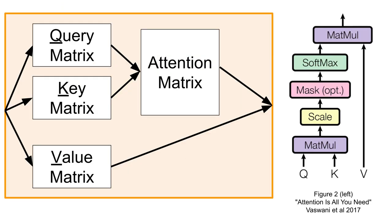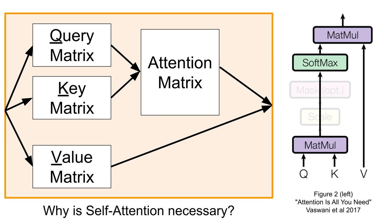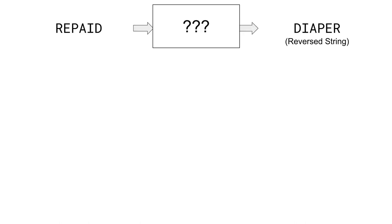We have successfully implemented figure 2 from the original transformers paper. We didn't touch mask or scaling, but those are relatively minor details deferred to the appendix video. Now is a perfectly reasonable time to ask yourself: why bother with this complex self-attention thing anyway? What benefits does it have over the plain linear transform we used to do the ATBASH cipher? To answer that, let's look at reversing a string — that is, switching the order of the characters from left to right to right to left.